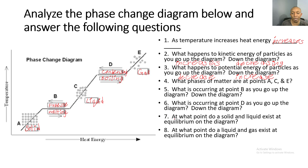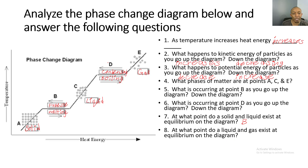Number seven: at what point do a solid and liquid exist at equilibrium on the diagram? Equilibrium means at what point do they exist at the same time. Just like a piece of ice that is partially melting — you have some liquid but still have ice — that's at point B. Number eight: at what point do a liquid and gas exist at equilibrium? That's the boiling point where liquid starts turning to gas, which is at point D.